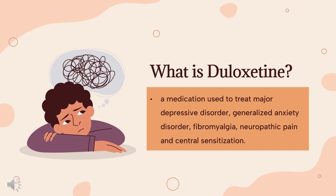Duloxetine is a serotonin norepinephrine reuptake inhibitor (SNRI). Similarly to SSRIs and other SNRIs, the precise mechanism for its antidepressant and anxiolytic effects is not known. Duloxetine was approved for medical use in the United States and in the European Union in 2004. It is available as a generic medication. In 2020, it was the 27th most commonly prescribed medication in the United States, with more than 22,000,000 prescriptions.